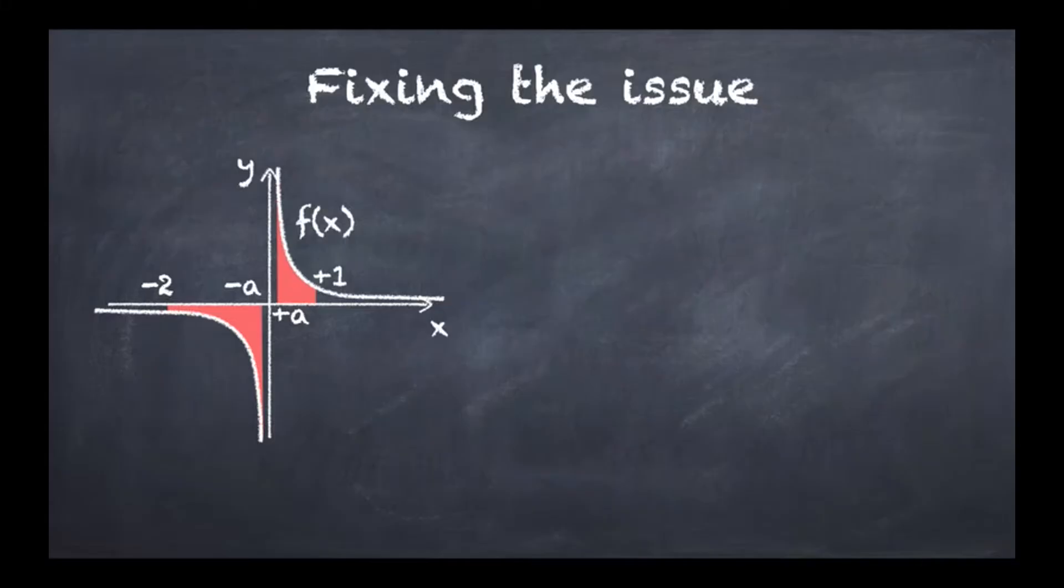This way relies on the fact that we can look separately at the interval from minus 2 to some value minus a which is not 0. And because here you see that the graph is continuous on this portion, then we can use no problem the fundamental theorem of calculus.